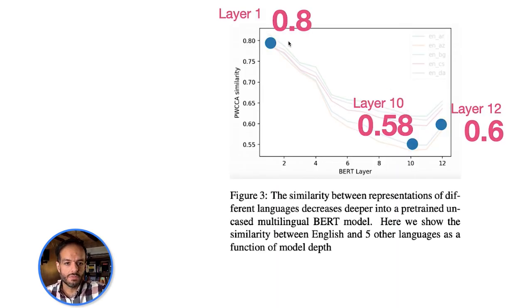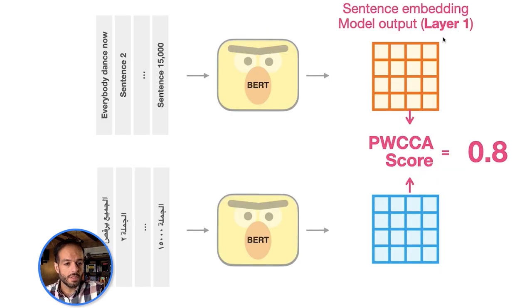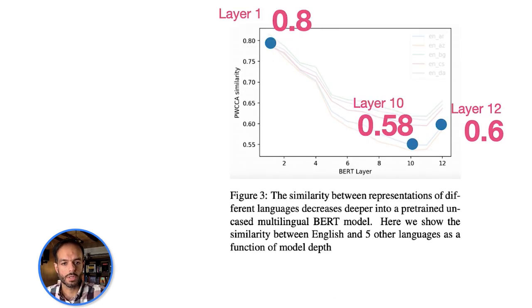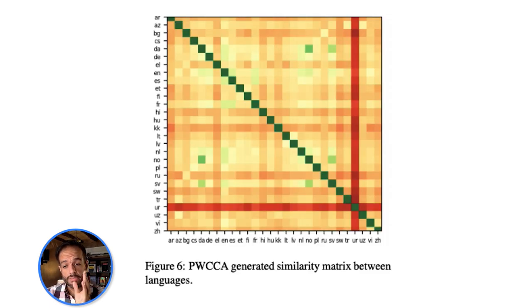So that's what they mean when they say BERT is not an interlingua. It's not translating all the various languages to one representation. It has these sort of substructures for each language. These are the activation matrices after the first layer of the same inputs, English and Arabic, and that's the 0.8 score here. So it starts with 0.8, goes down to 0.58, and then goes back up to 0.6.